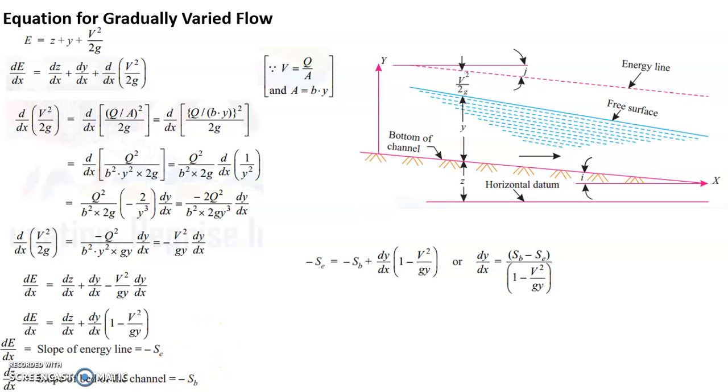Minus SE equals to minus SB plus DY by DX into 1 minus V square by GY. Or DY by DX equals to SB minus SE divided by 1 minus V square by GY. Or DY by DX equals to SB minus SE divided by 1 minus Froude's number square. Now this is an equation for gradually varied flow. The meaning of this equation DY by DX. It says something related to DY by DX. DY by DX is change in the depth of flow along X direction.